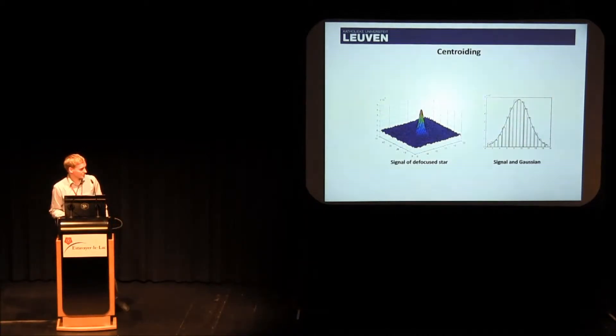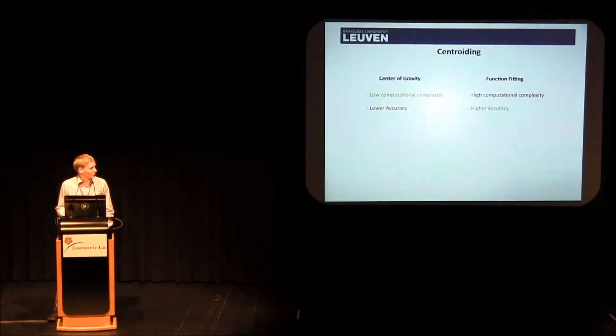I will introduce briefly the three algorithms that we developed at KU Leuven. I will go over them quite quickly because we don't have that much time, but you can look up more information or contact me if you have questions about them after the presentation. If you look at centroiding, we try to determine the star centroids as accurately as possible. We see a signal of a defocused star here, so it's brightest in the middle, and then it falls off towards the edges, and you can quite accurately model that by a Gaussian function. At KU Leuven, we developed an algorithm,